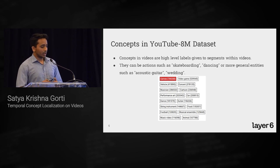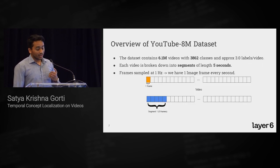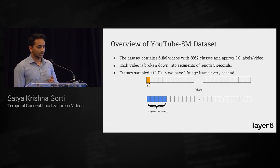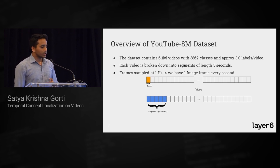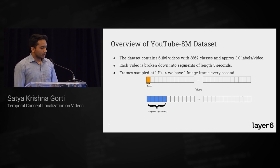Looking at the numbers of the dataset: it has 6.1 million videos, making it by far the largest video dataset, with over 3,000 classes or concepts. Since it's a multi-class problem, each video has approximately three labels or concepts.